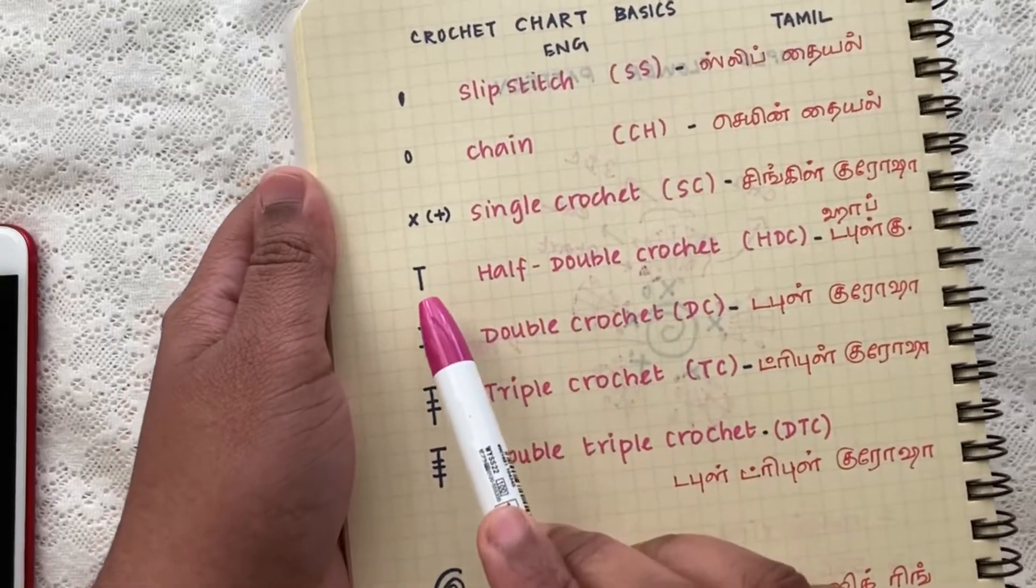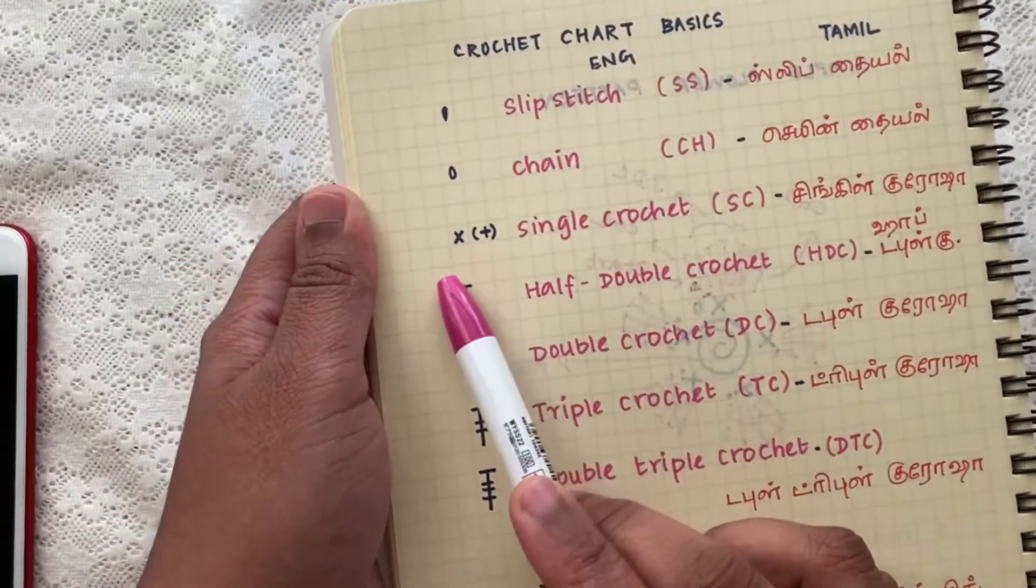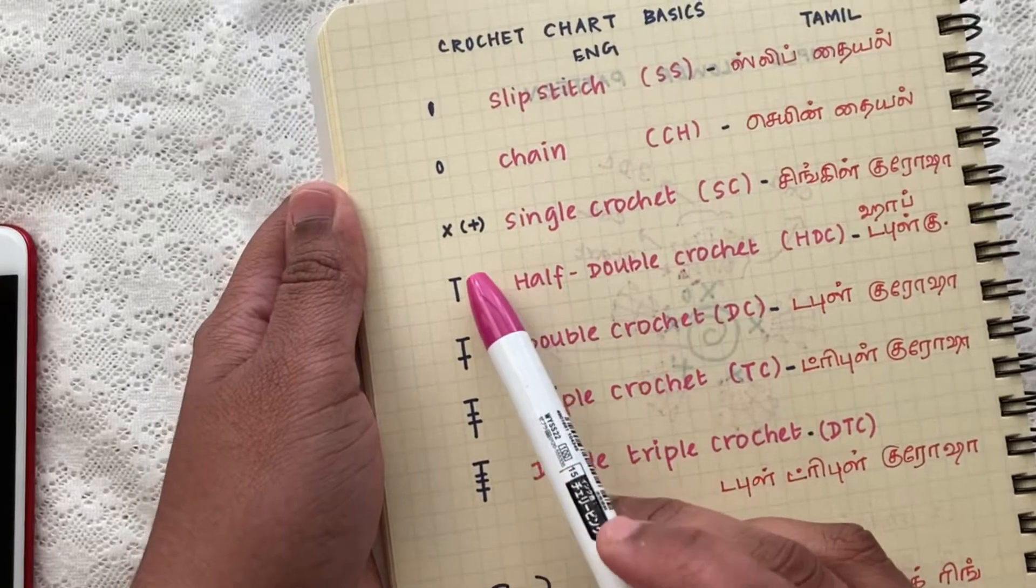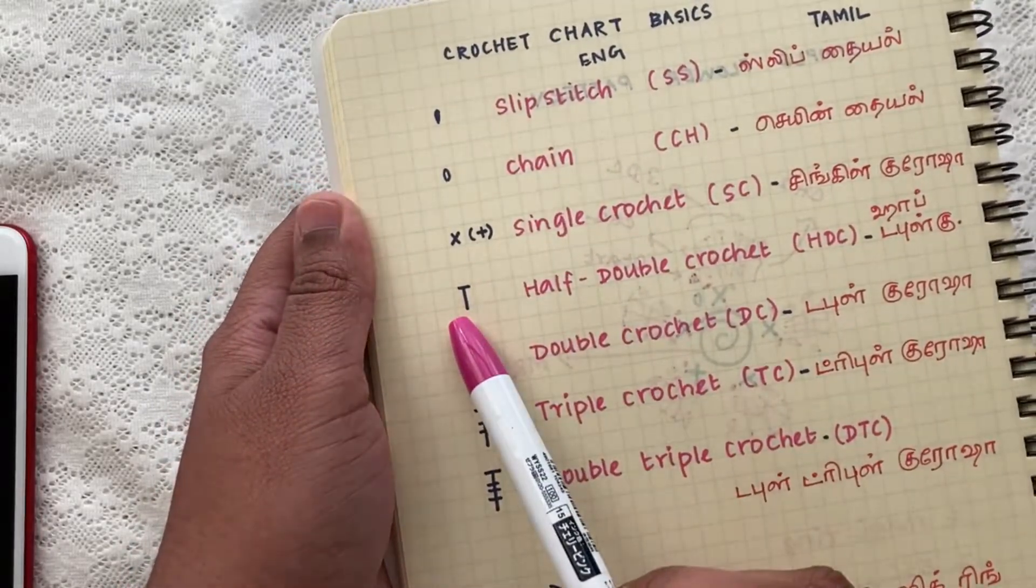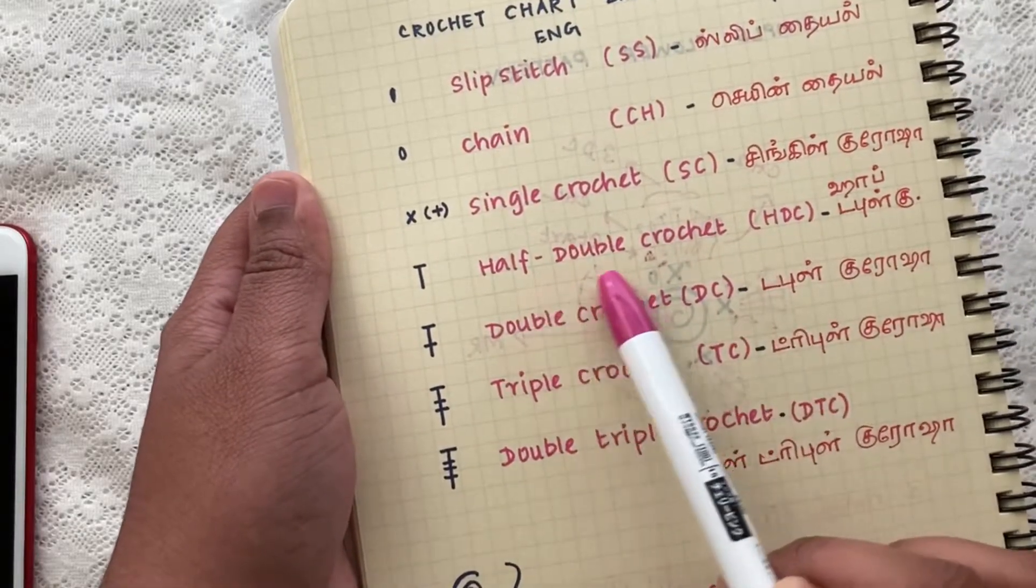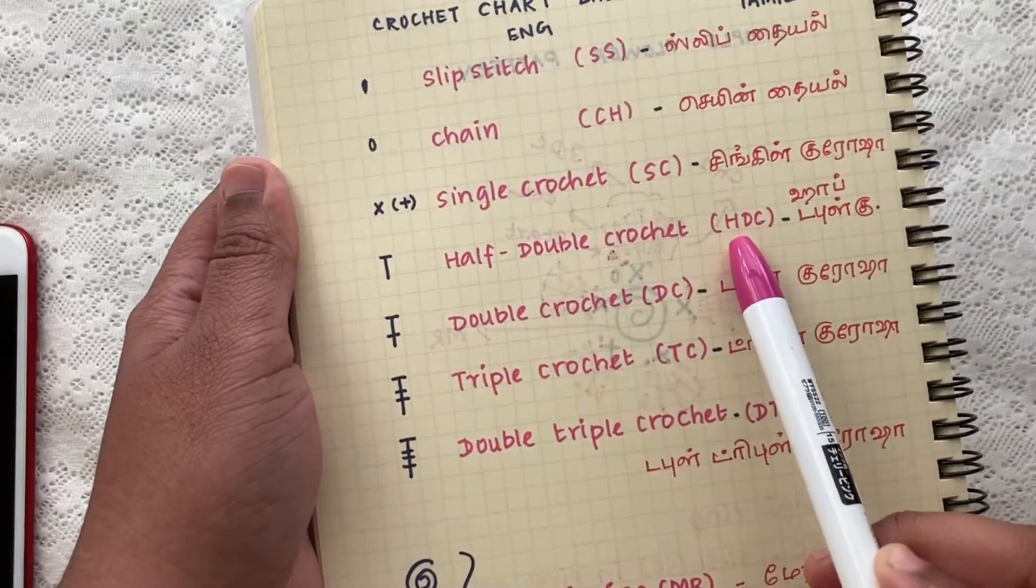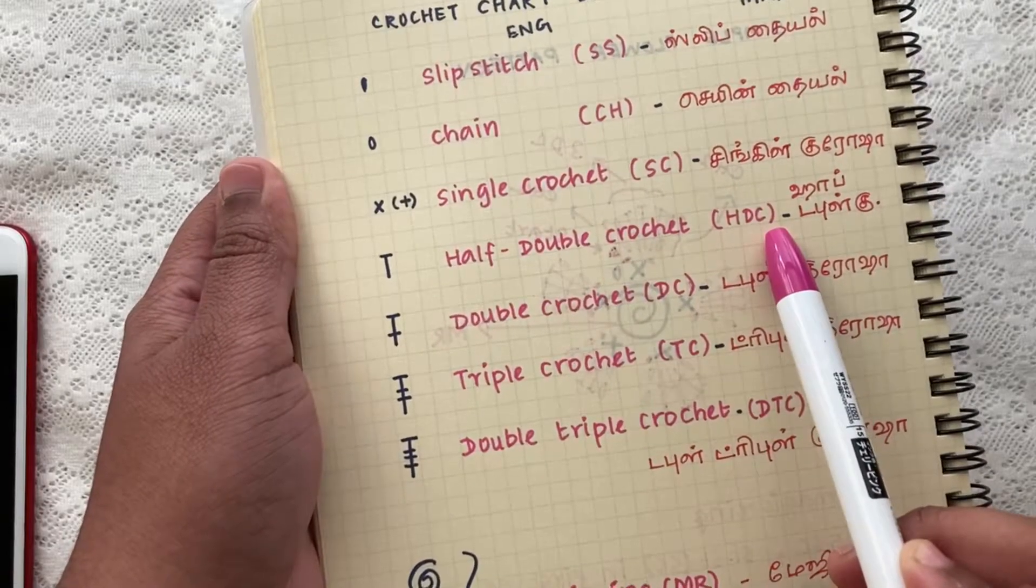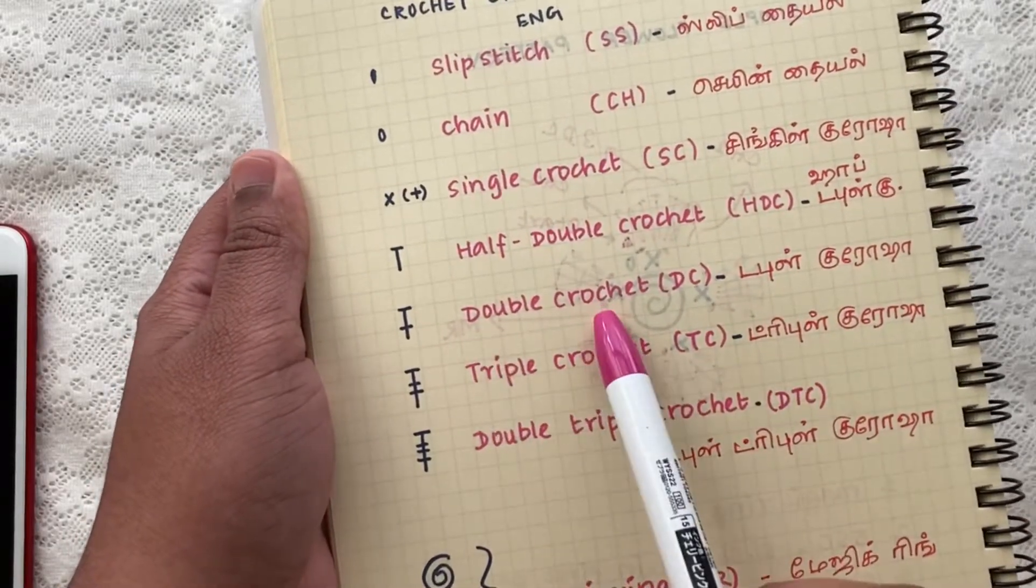For this half double crochet we have the symbol just like a T which has a vertical line and the horizontal bar. Half double crochet is abbreviated as HDC. And for double crochet...